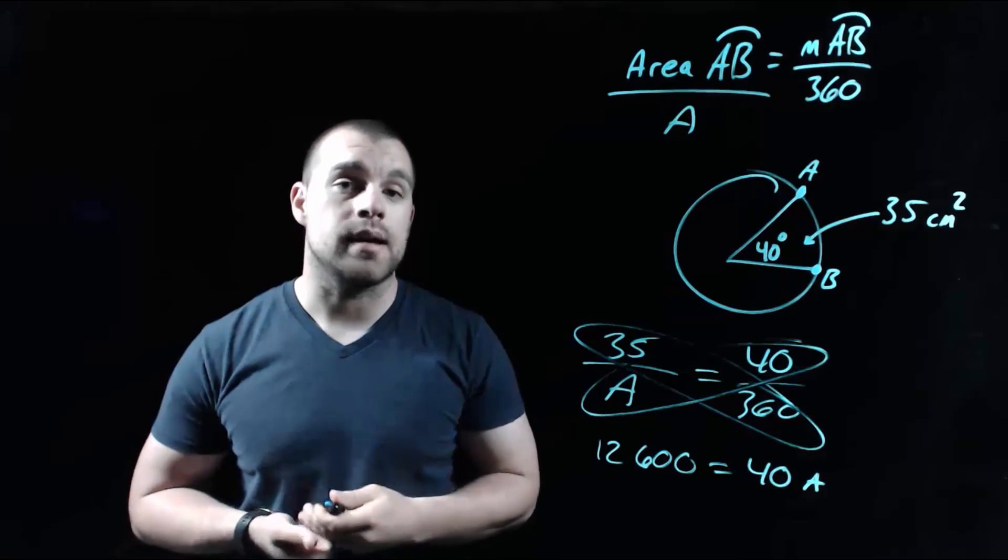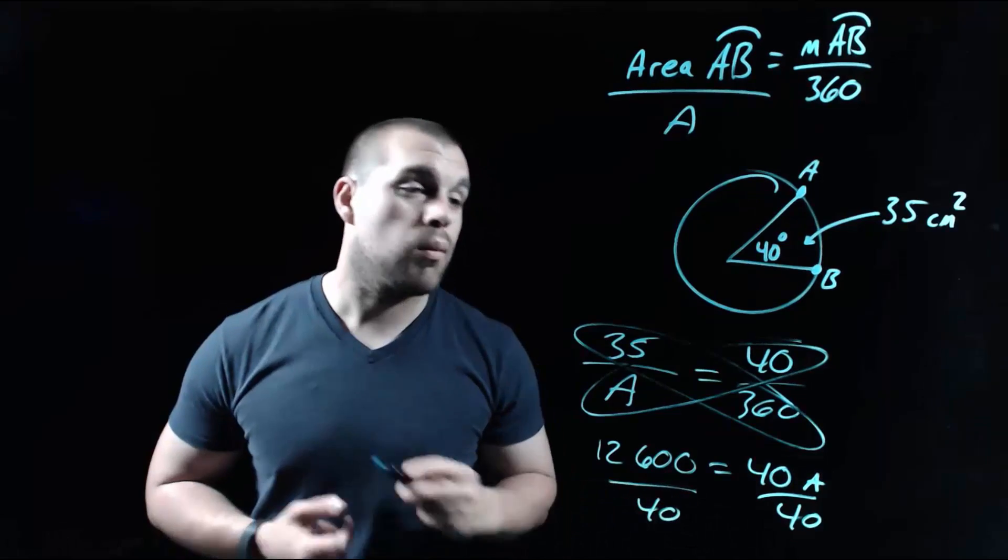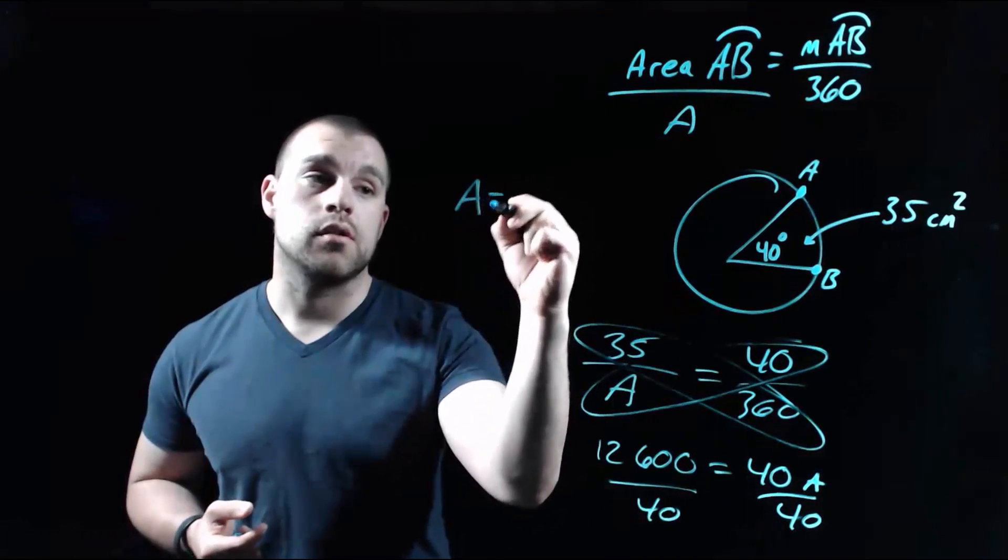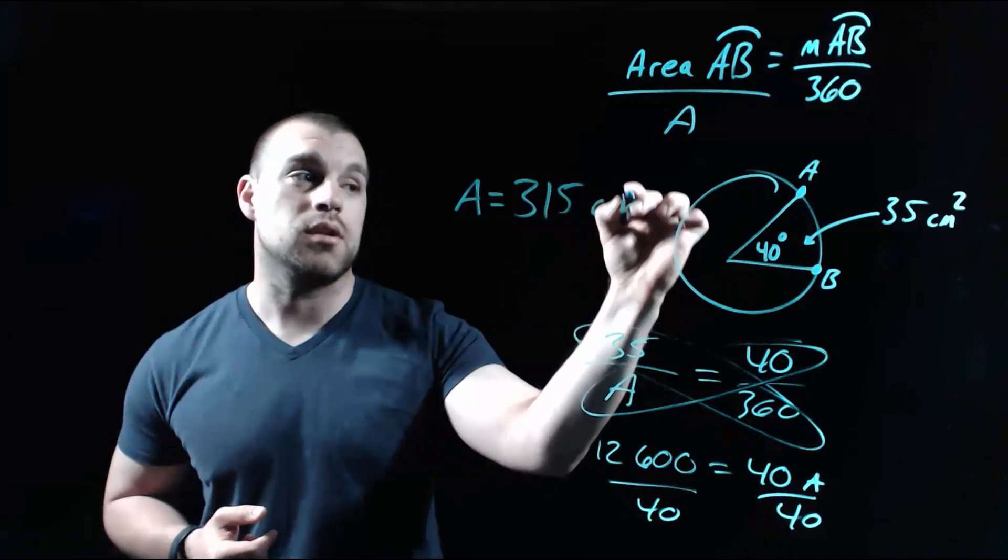Our last step is to get A all by itself, so we're going to divide both sides by 40. And when we do that, the area of our circle ends up being about 315 centimeters squared.